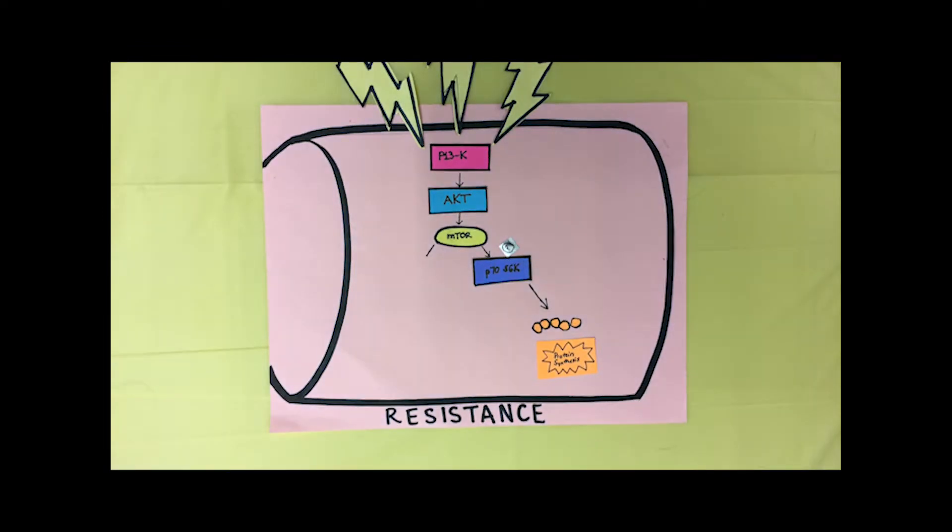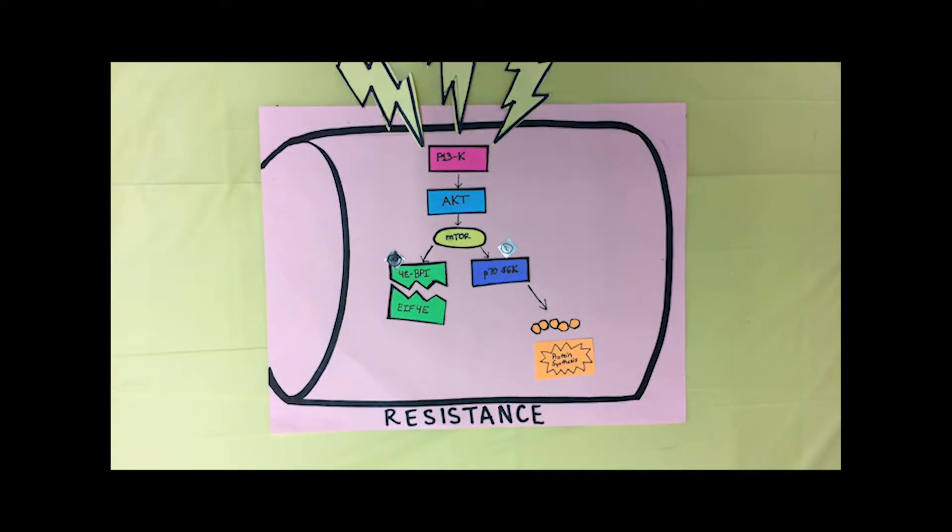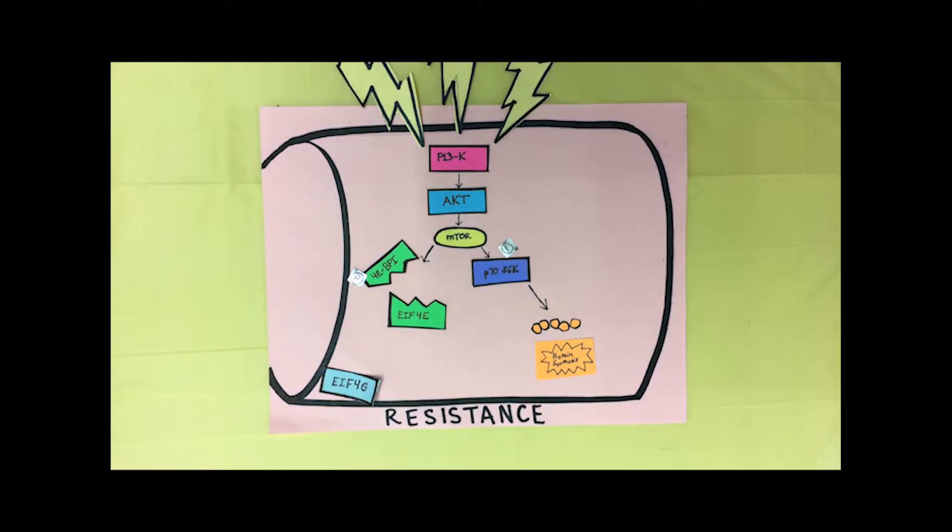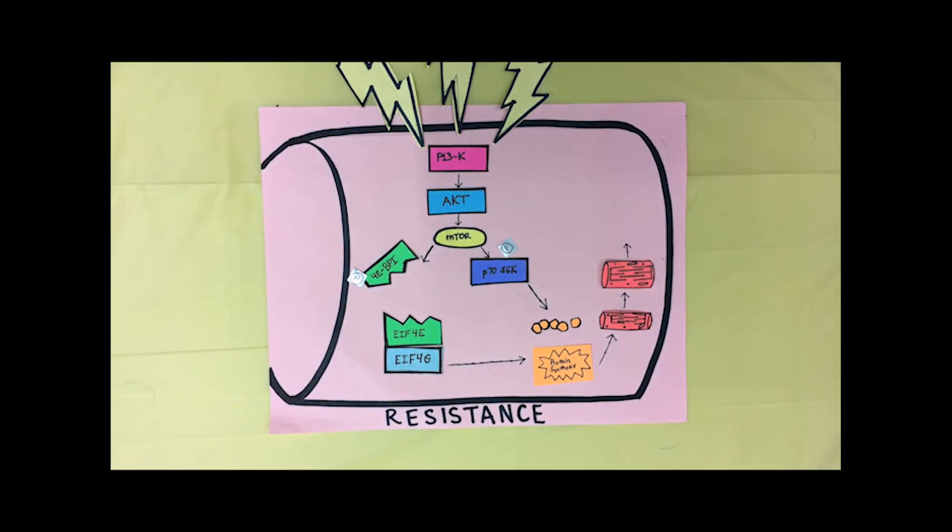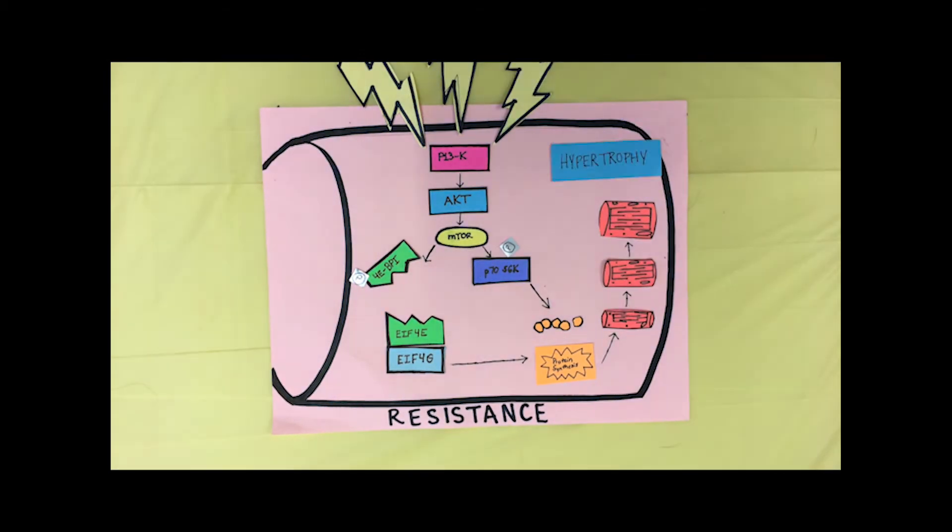mTOR also phosphorylates 4E-BP1, which results in disassociation from a complex with the translation initiation factor EIF4E. Once free, EIF4E forms a complex with EIF4G, resulting in upregulated mRNA for protein synthesis. The overall effect is an increase in myotube production, which leads to muscular hypertrophy, or enlargement of the muscle cell.